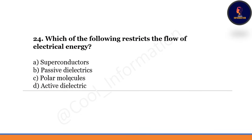Which of the following restricts the flow of electrical energy? Option A: superconductor. Option B: passive dielectric. Option C: polar molecules. Option D: active dielectric. Correct option is B — passive dielectrics restrict the flow of electrical energy.